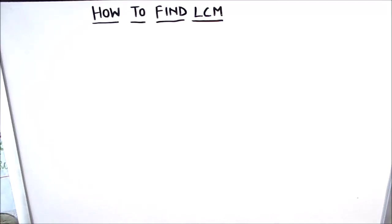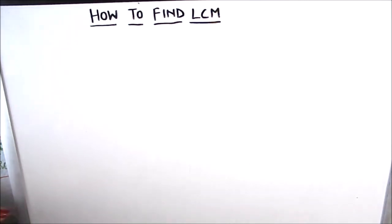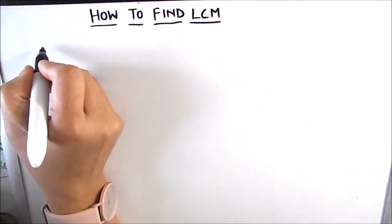Hello students! Today in this video we are going to learn how to find the LCM. We will be covering a few examples of finding the LCM of two and three numbers. LCM, as the name suggests, is the least common multiple — that means it is the smallest number which is a common multiple of all the numbers for which we are finding the LCM.